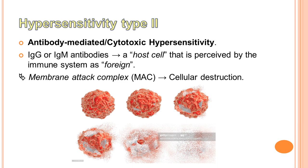The next type is hypersensitivity type 2, also called antibody-mediated or cytotoxic hypersensitivity. It is mediated by IgG or IgM antibodies directed against a specific target cell or tissue, which is actually a host cell perceived by the immune system as foreign, leading to cellular destruction via the membrane attack complex (MAC). Phản ứng quá mẫn loại 2 còn được gọi là phản ứng qua trung gian kháng thể hoặc nhiễm độc tế bào, qua trung gian IgG hoặc IgM, dẫn đến phá hủy tế bào thông qua phức hợp tấn công màng tế bào.